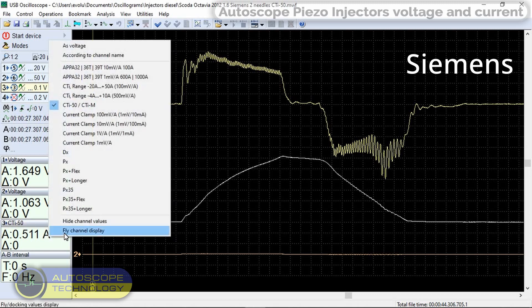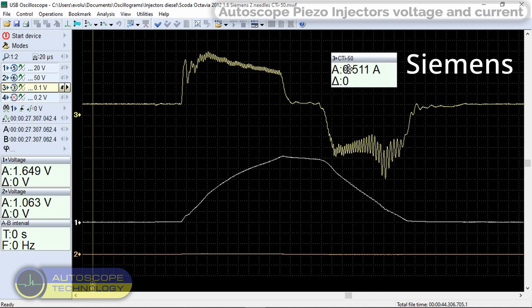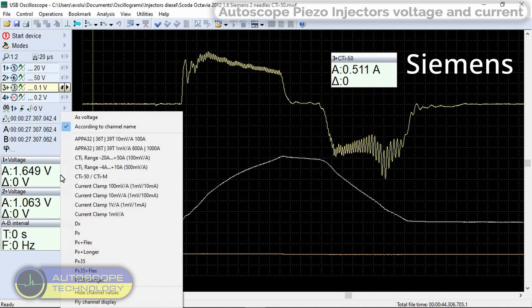The panel of the first channel displays the amount of current in the circuit. The panel of the second channel displays the voltage value on the supply wire of the injector.